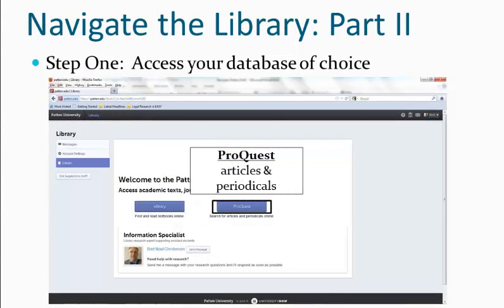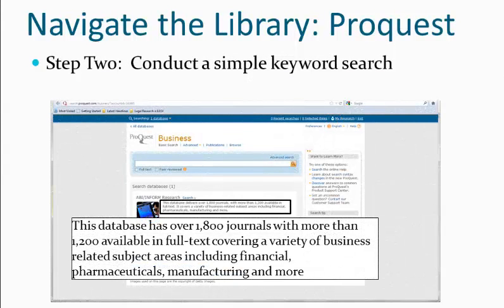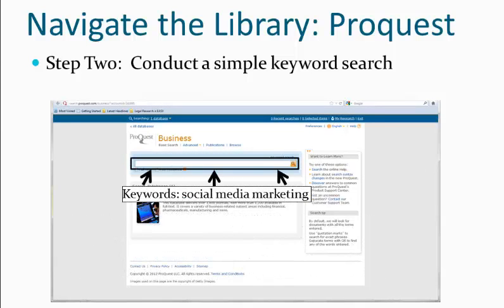Now let's take a look at the ProQuest database. ProQuest allows us to search for articles and periodicals. Periodicals are also known as magazines. Again, the first step is to come up with the keywords you want to search. Here is the main page for ProQuest, and with over 1,800 resources, you're sure to find something you can use. Let's type our keywords in the search field and click Search.